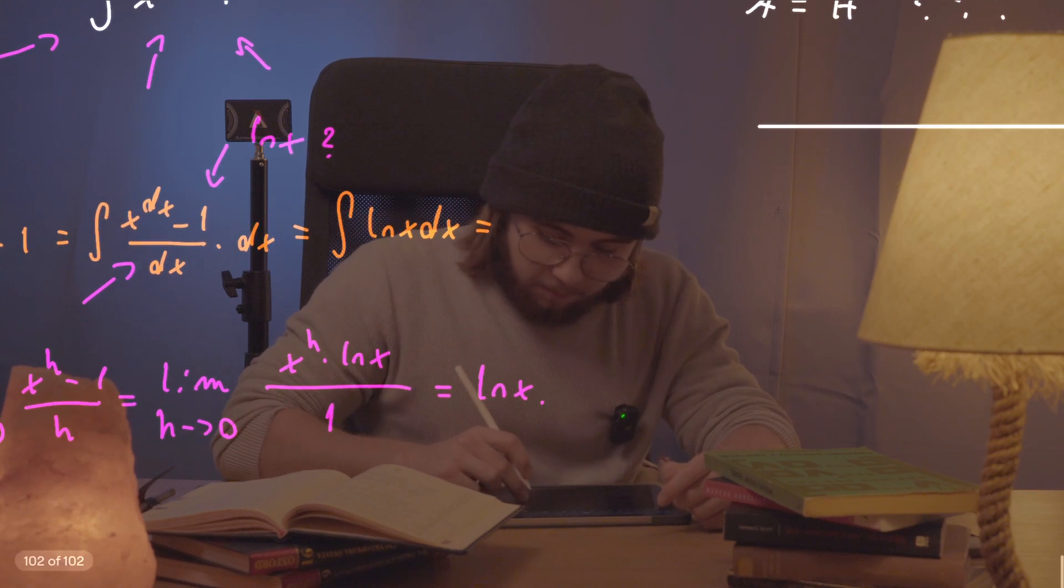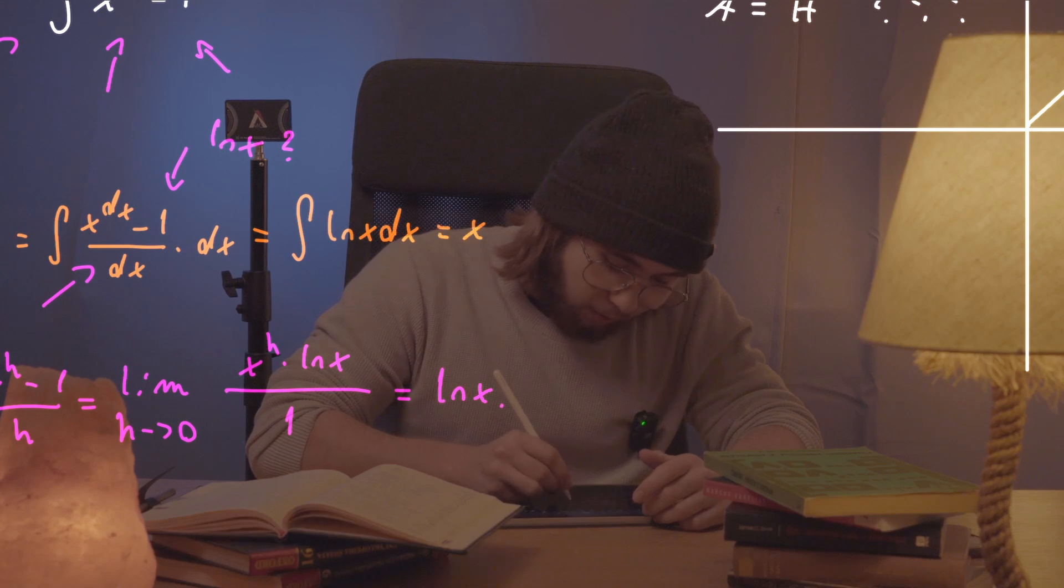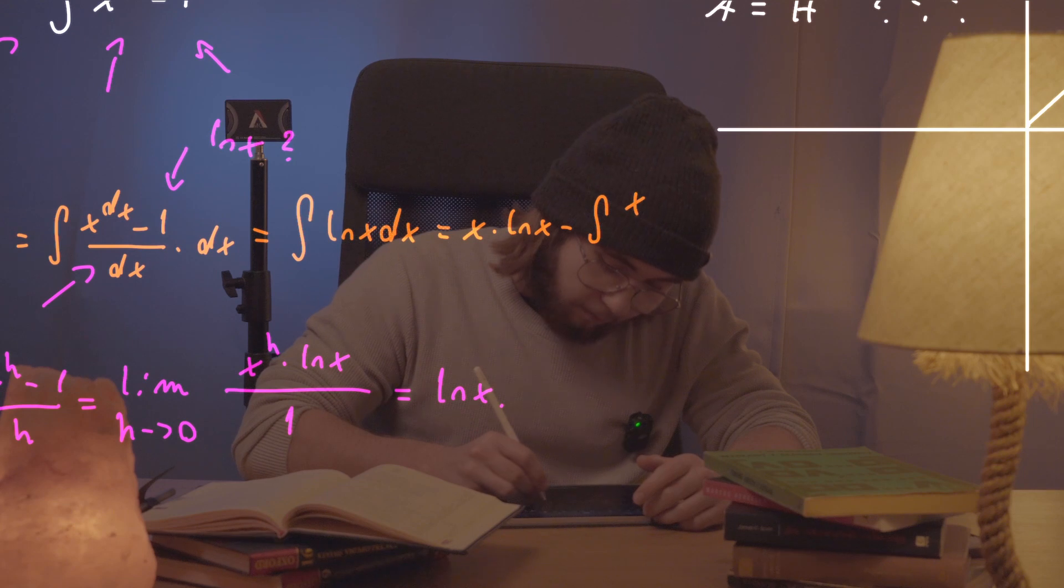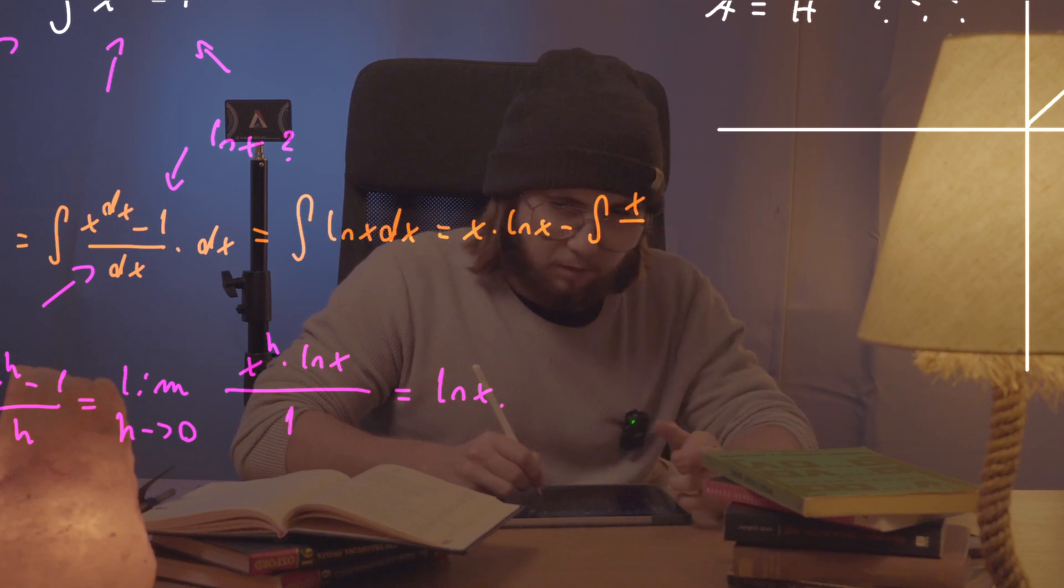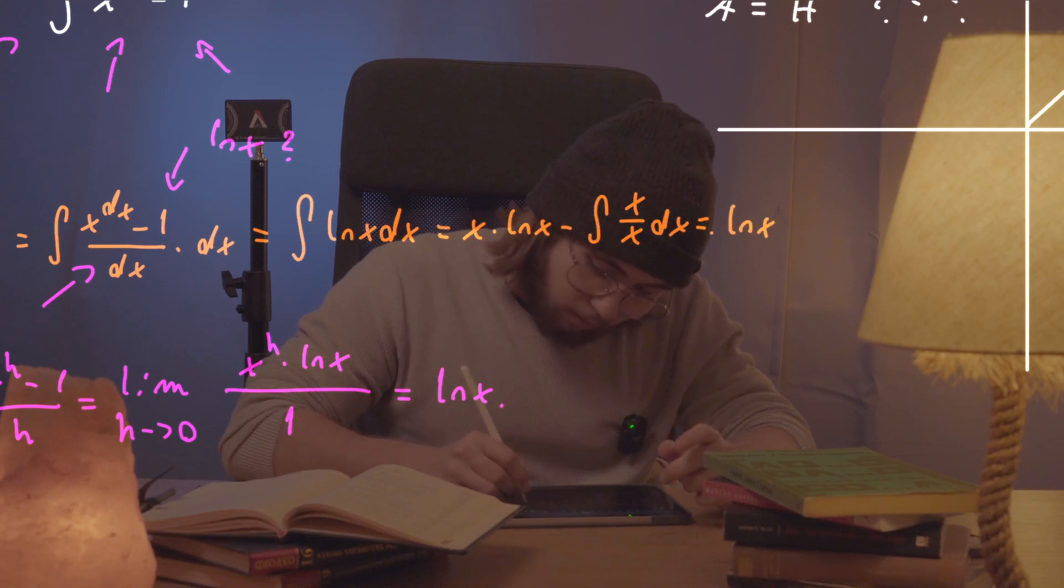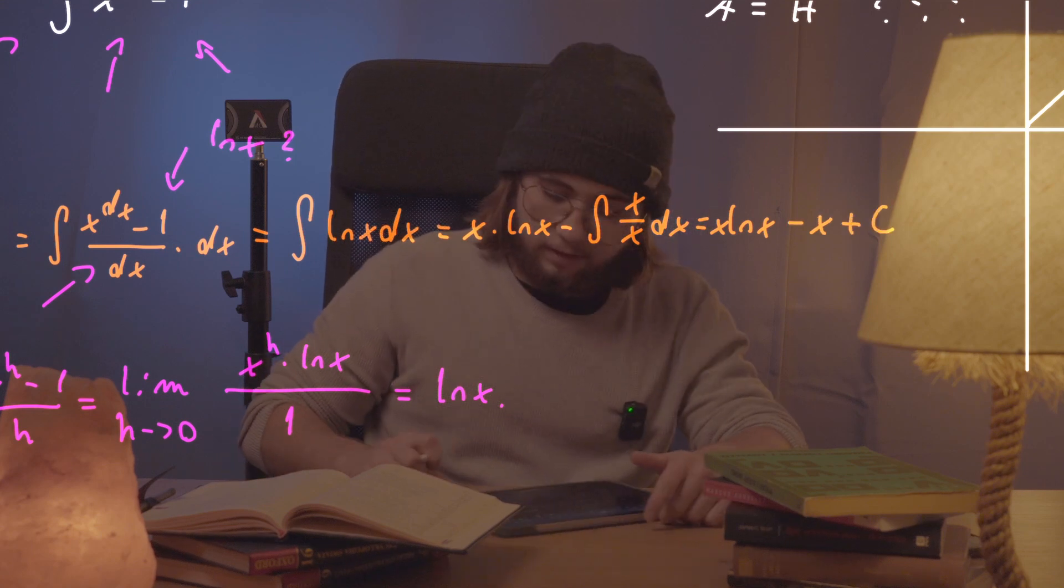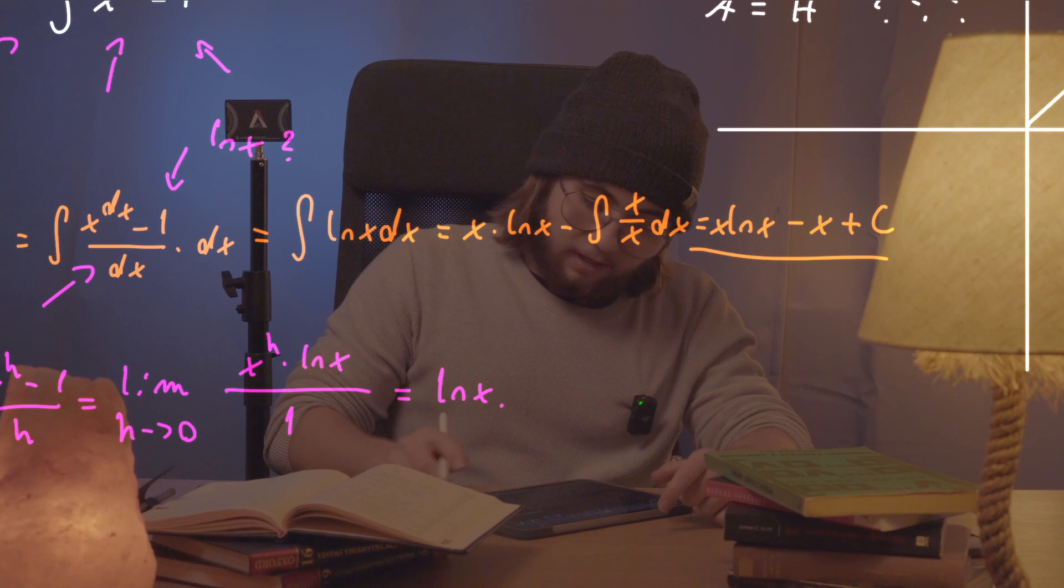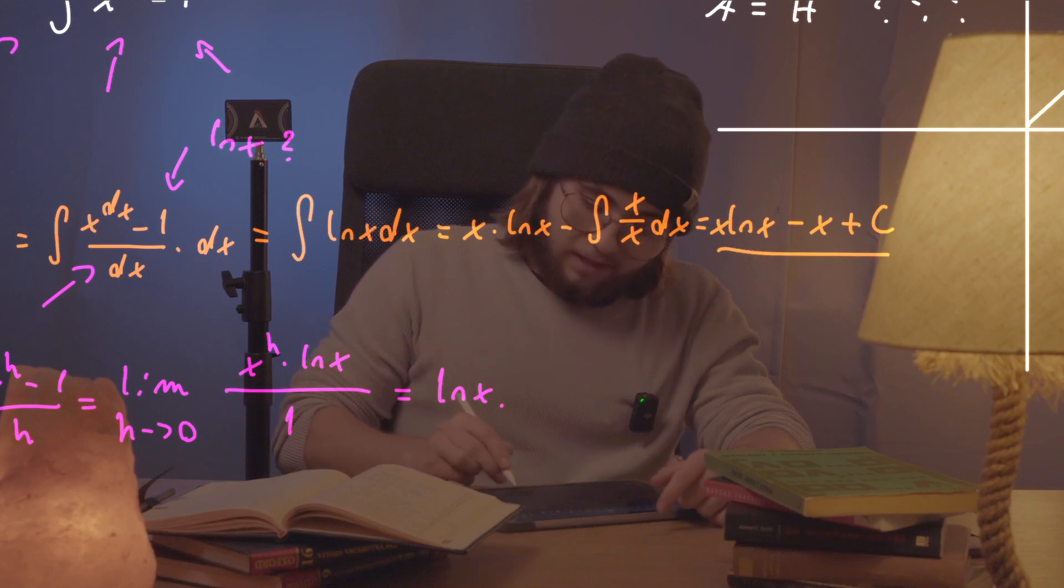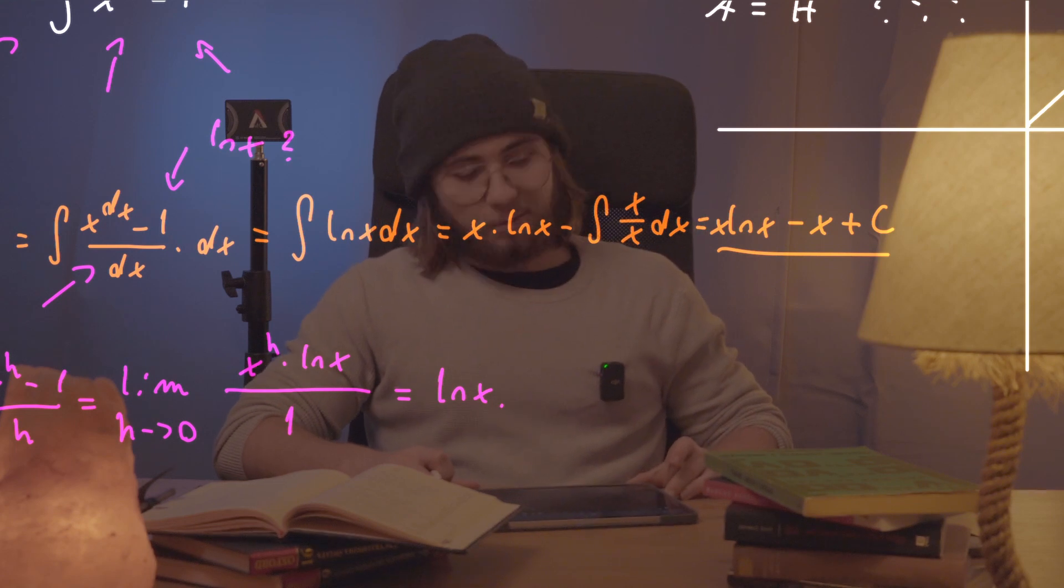And well, now using the integration by parts method, we can just say it's going to be equal to x multiplied by the natural log of x minus the integral of x multiplied by the derivative of natural log of x, which is x over x. This is going to be equal to natural log of x multiplied by x minus x plus a constant. Never forget the plus C. And so this is exactly what the integral of x to the power of dx minus one is equal to.